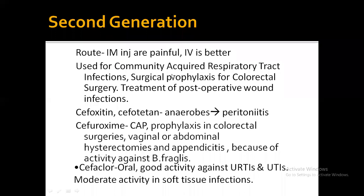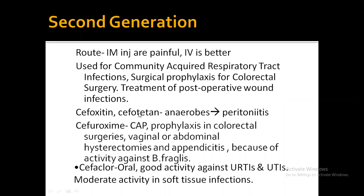Second generation cephalosporins can be used for community-acquired respiratory tract infections, surgical prophylaxis of colorectal surgery, and post-operative wound infections. Cefoxitin and cefotetan can be used against anaerobes in peritonitis. The most commonly used second generation cephalosporin is cefuroxime, which is used for community-acquired pneumonia, prophylaxis of colorectal surgeries, vaginal infections, and appendicitis. Cefuroxime has oral activity and can be used for upper respiratory tract infections and urinary tract infections.